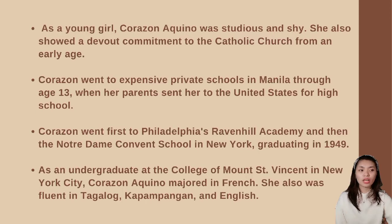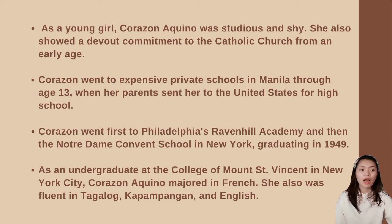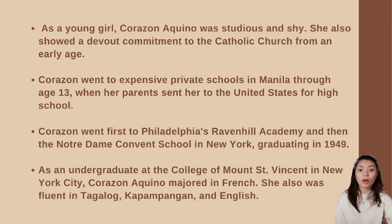As a young girl, Corazon Aquino was quiet and shy, and showed devout commitment to the Catholic Church from an early age. She attended expensive private schools in Manila until age 13, when her parents sent her to the United States for high school — first to Philadelphia's Ravenhill Academy and then the Notre Dame Convent School in New York, graduating in 1949. As an undergraduate at the College of Mount St. Vincent in New York City, she majored in French and was also fluent in Tagalog, Kapampangan, and English.